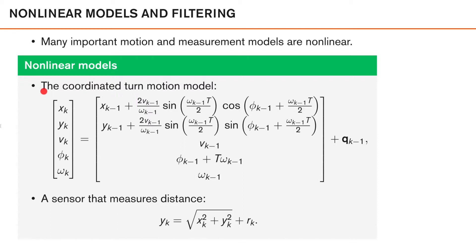Important examples include the coordinated turn motion model, which in automotive applications is often used to describe the motion of surrounding vehicles. This is clearly a non-linear function of the state, as it contains cosine and sine functions dependent on phi and omega, as well as multiplicative factors. Although part of the model is actually linear, as a whole this is a non-linear function fk-1 of the previous state xk-1.